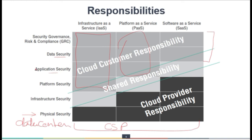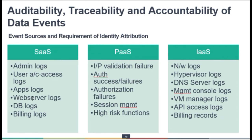Auditability, traceability, and accountability of data events — when we talk about data events, we mean SIEM: security event logs being collected from different services, aggregated, correlated, and used for different purposes. To understand what level of auditability, traceability, and accountability you have as a SaaS customer, you should pay close attention to the terms used in SLAs and the cloud contract and review them properly.